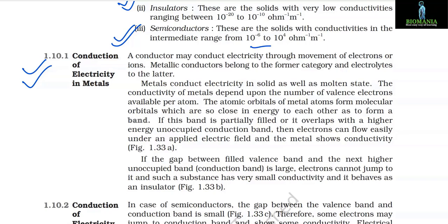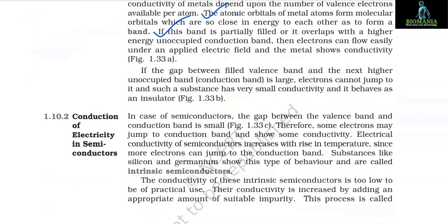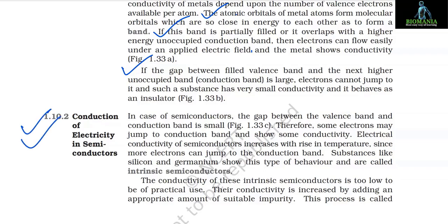1.10.1 Conduction of Electricity in Metals. A conductor may conduct electricity through movement of electrons or ions — metallic conductors belong to the former category. Metals conduct electricity in solid as well as molten state. The conductivity of metals depends upon the number of valence electrons available per atom. The atomic orbitals of metal atoms form molecular orbitals so close in energy as to form a band. If this band is partially filled or overlaps with a higher energy unoccupied conduction band, electrons can flow easily under an applied electric field. If the gap between filled valence band and unoccupied conduction band is large, electrons cannot jump to it and the substance behaves as an insulator.